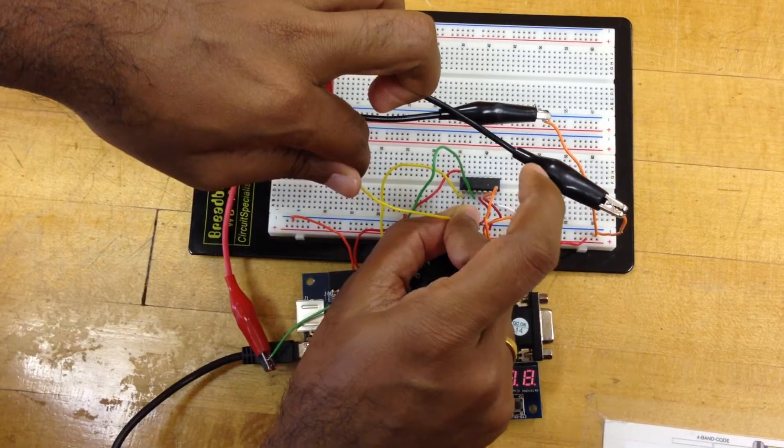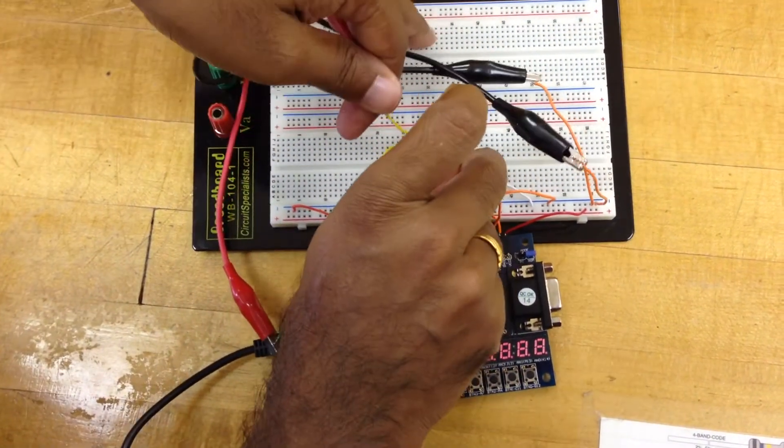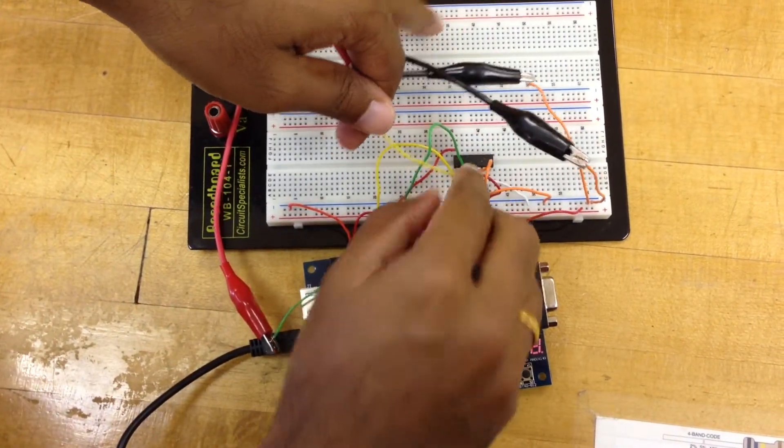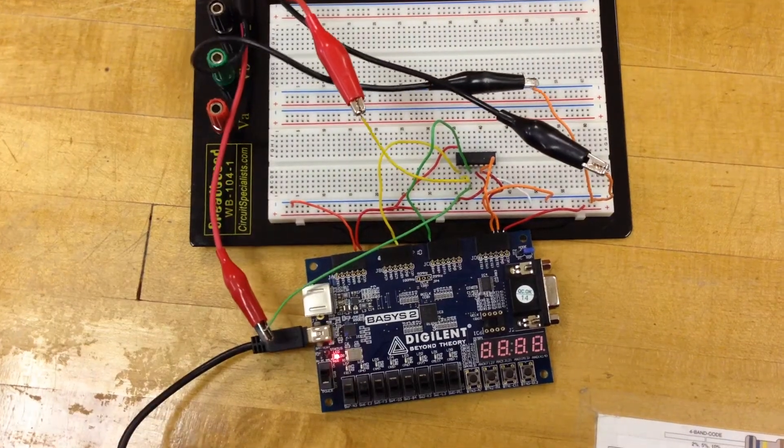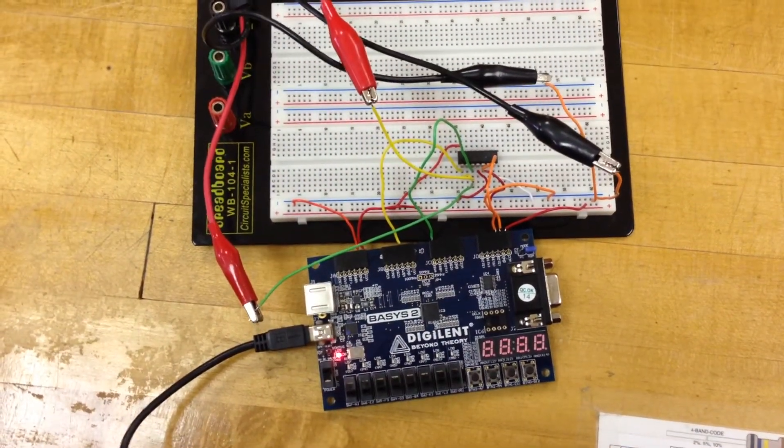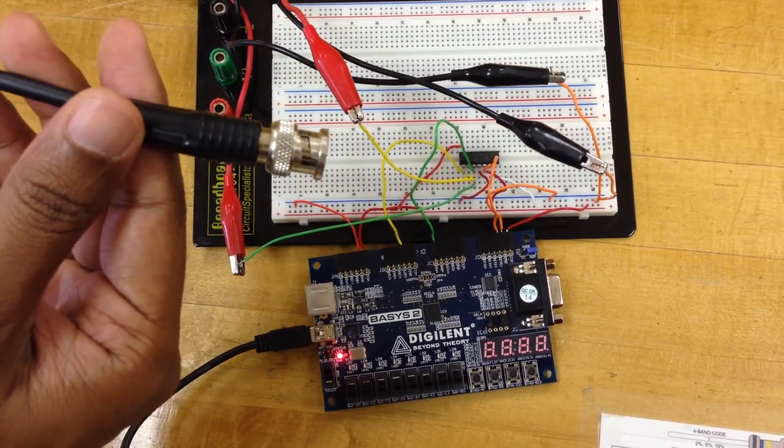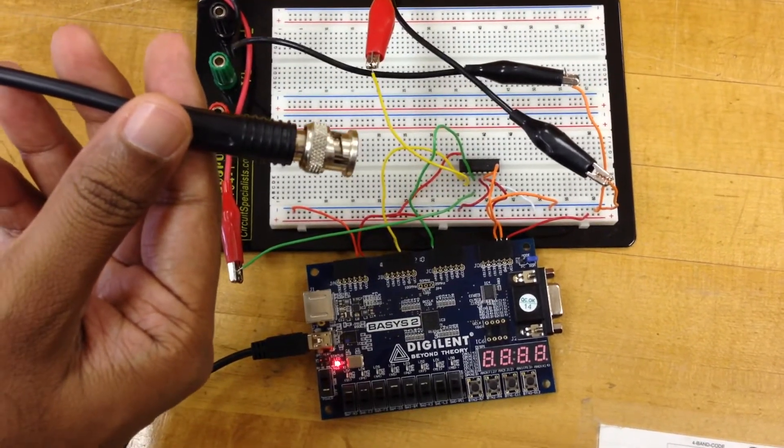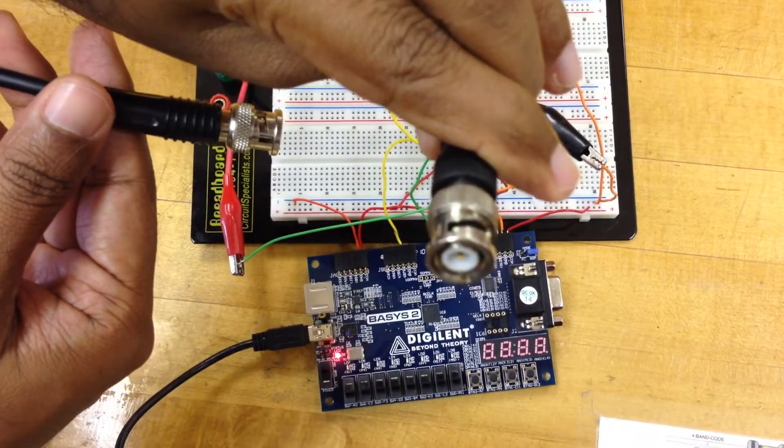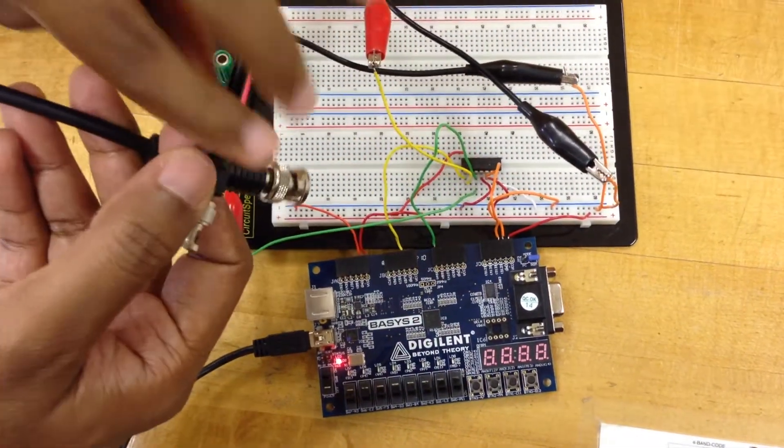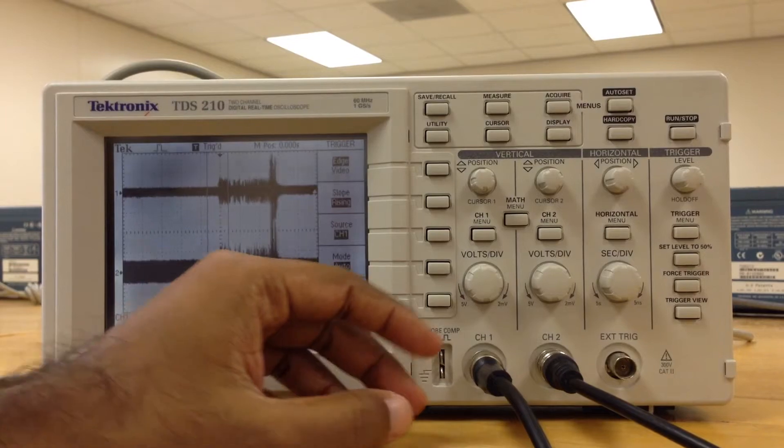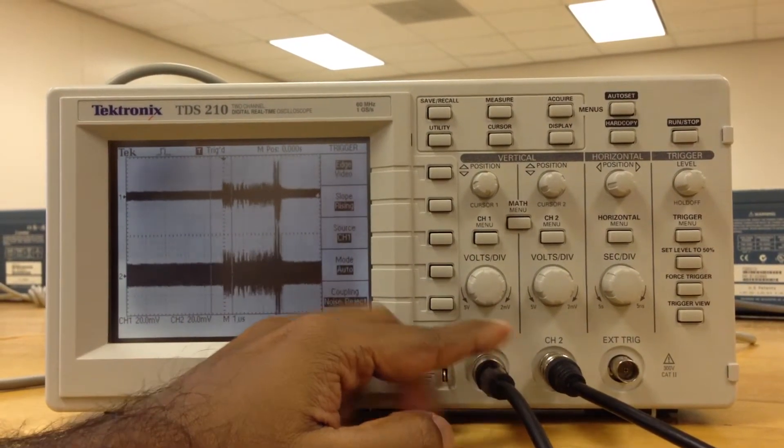Now the first probe that I've connected, I need to connect it to channel 1, and the second probe needs to go to channel 2. I've connected clock to channel 1 and output of the D flip-flop to channel 2.